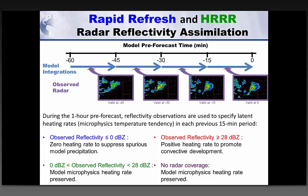Where reflectivity is greater than 28 dBZ, we replace the model microphysics latent heating rate with this specified value. In regions where reflectivity shows no coverage, we zero out the microphysics heating rate to suppress precipitation development in the model. In other regions of no radar coverage or low reflectivity, we allow the model microphysics latent heating rate to evolve on its own.